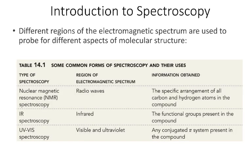The different regions of the electromagnetic spectrum are used to probe different aspects of molecular structure. In nuclear magnetic resonance spectroscopy, or NMR, we use radio waves to look at the specific arrangement of carbon and hydrogen atoms in the compound. In this chapter, we're talking about IR spectroscopy, where we use infrared radiation to identify different functional groups present in the compound. And in general chemistry, you've almost certainly used ultraviolet/visible spectroscopy, which looks at electronic transitions in the molecule.